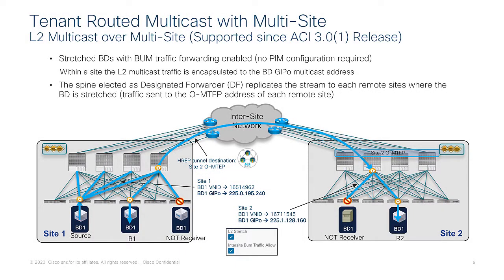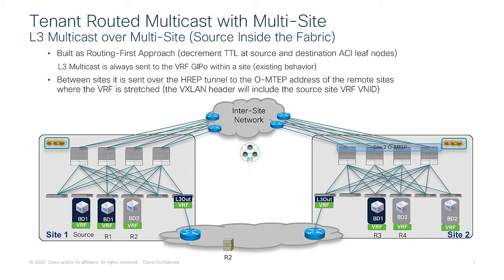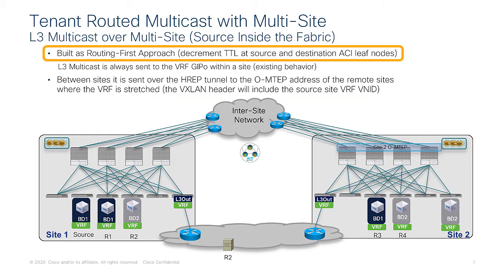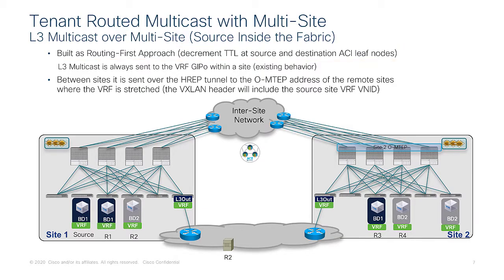By simply extending a BD with BUM forwarding enabled, you can ensure that layer 3 multicast traffic is forwarded between sources and receivers connected in different sites. However, if sources and receivers are in different bridge domains or different subnets, you need to enable layer 3 multicast forwarding — tenant routed multicast. The TRM functionality is built as a routing-first approach, which means TTL decrement will happen at the ingress leaf and at the egress leaf, regardless of whether the source and receivers are in the same BD or different BDs.